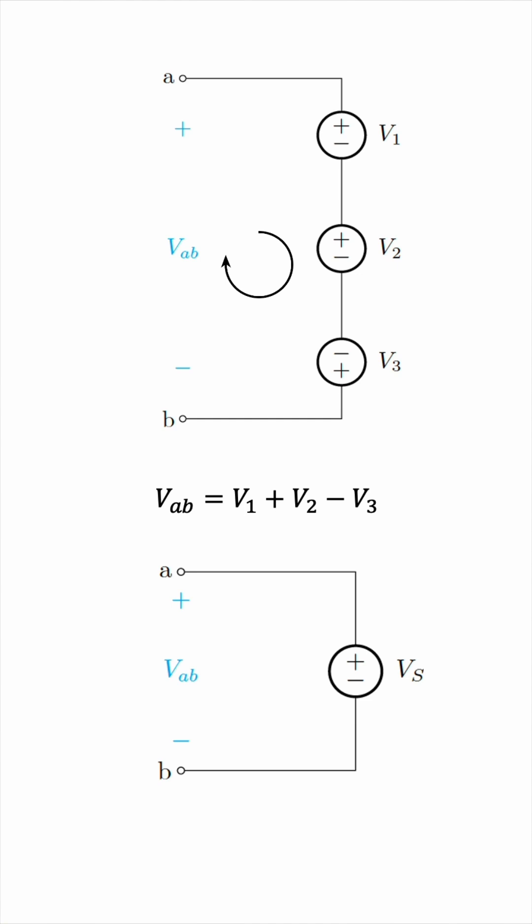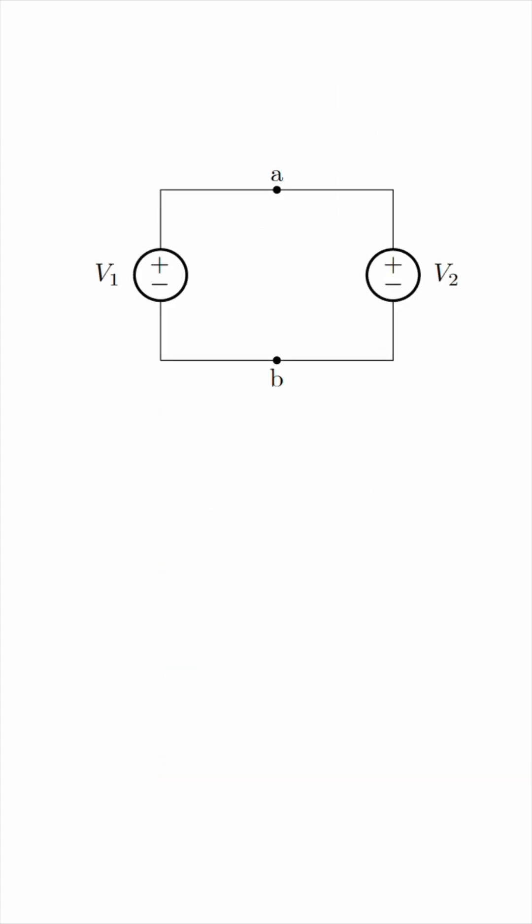Now this is the case for voltage sources in series. But what if you have voltage sources in parallel, like this? We know that if elements are in parallel, then they should have the same voltage across them. So this connection is only possible if the two voltage sources are equal.